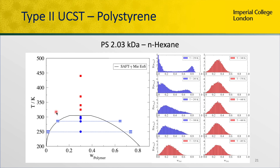More interestingly, we could not only get LCST behavior, we could get upper critical solution temperature behavior as well, where we increase the temperature and the system becomes miscible. This is the case of low molecular weight polystyrene in N-hexane, and we increase the temperature and the system goes from a bimodal distribution to a unimodal distribution.